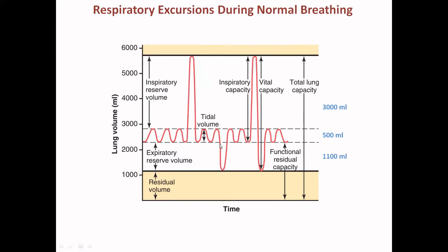Then there is the expiratory reserve volume: after normal expiration, you try to forcefully expire as much air as you can. The voluntary amount of air that can be completely exhaled is the expiratory reserve volume. The vital capacity combines the tidal volume of 500 ml, the inspiratory reserve volume, and the expiratory reserve volume — meaning a person can intentionally inhale or exhale this total amount. The inspiratory capacity is the normal tidal volume plus the inspiratory reserve volume.